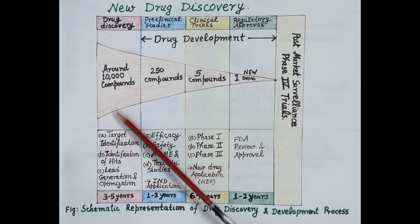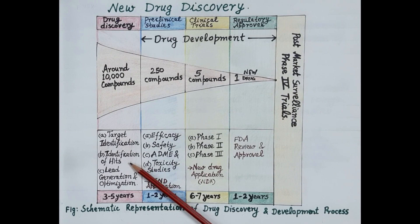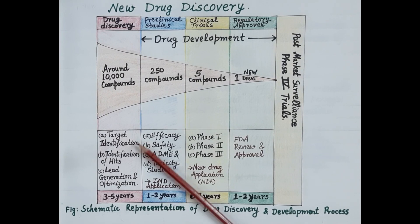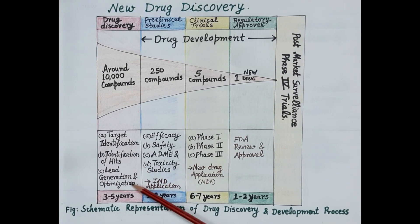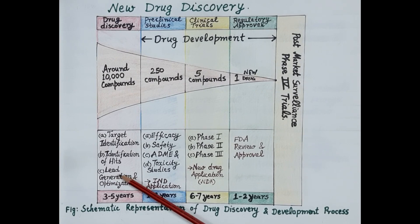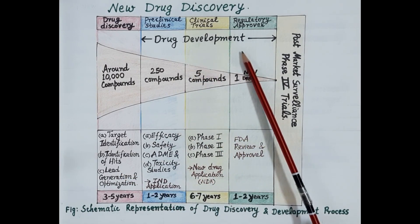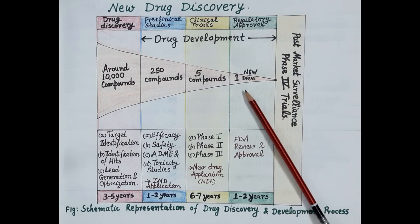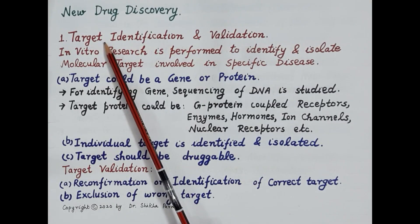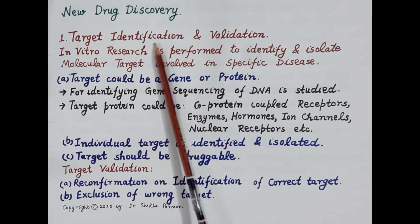In this video we are going to discuss the steps in the discovery of new drugs. The major steps in new drug discovery are: target identification and validation, then high throughput screening of compounds — that is the identification of hits — and lead generation and optimization. The process of new drug discovery ends with the generation of leads and their optimization.